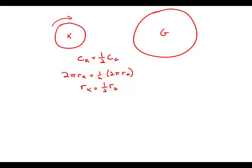And of course, what we're looking for is the area of K. The area of K is πR², that amazing formula for the area of a circle. So if we knew R_K, we'd be able to figure out the area. And if we knew R_G, we'd be able to figure out R_K and figure out the area.